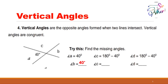Vertical angles are congruent and have the same measure. For angle C: 180 degrees minus 40 degrees equals 140 degrees. For angle D: 180 degrees minus 40 degrees also equals 140 degrees. Therefore angle C and angle D are vertical angles — they are opposite angles, and that's why they are called vertical angles.